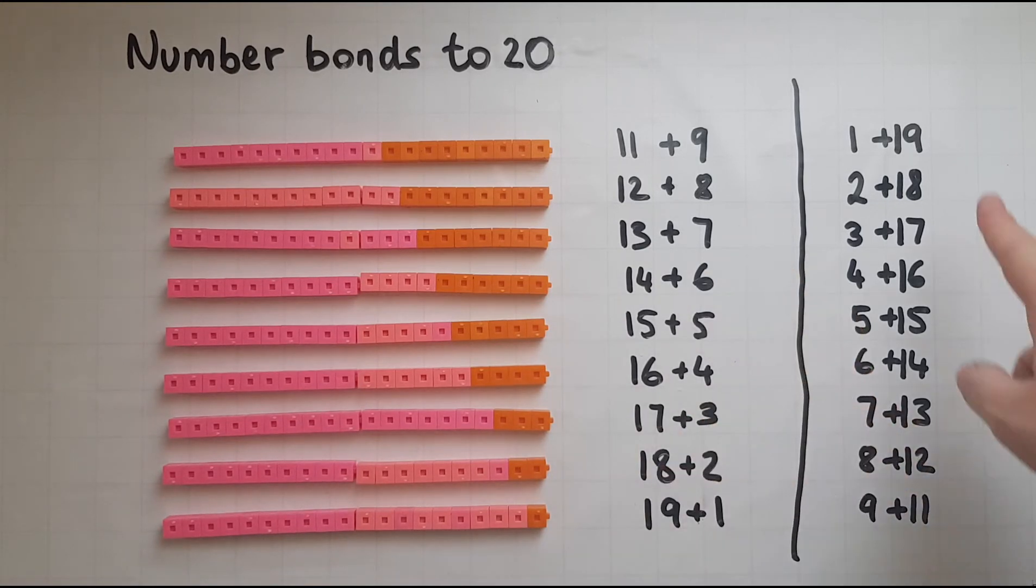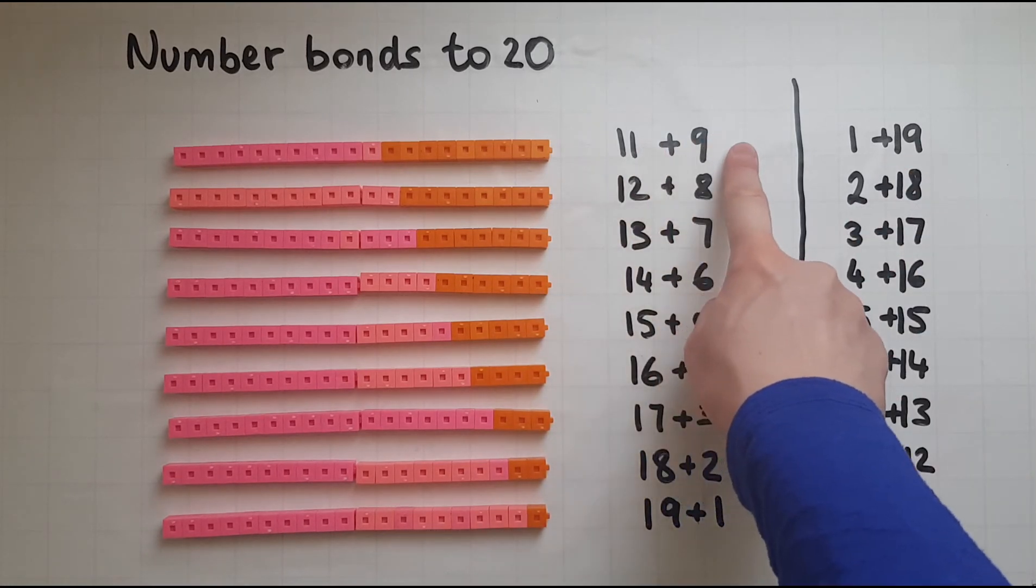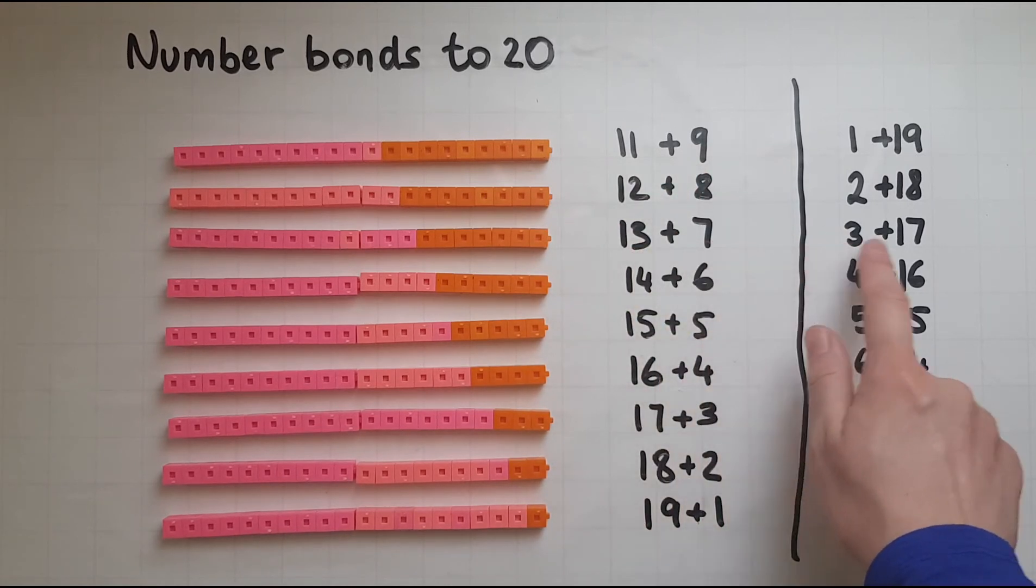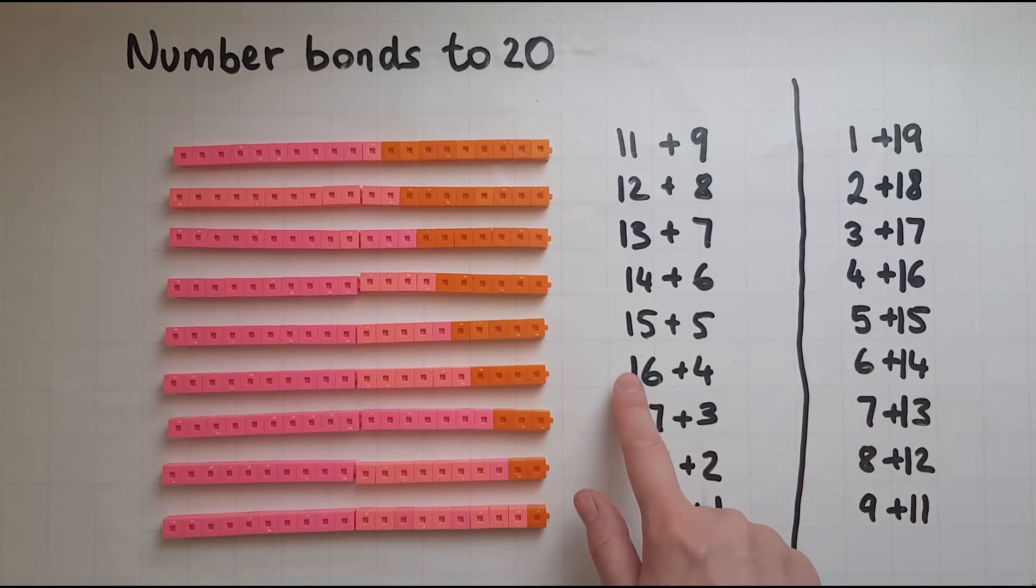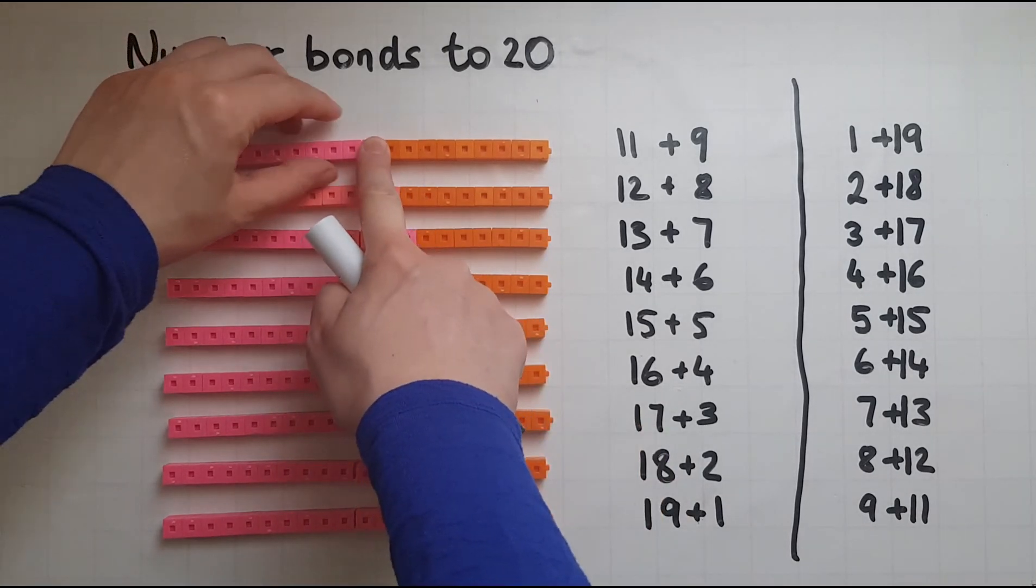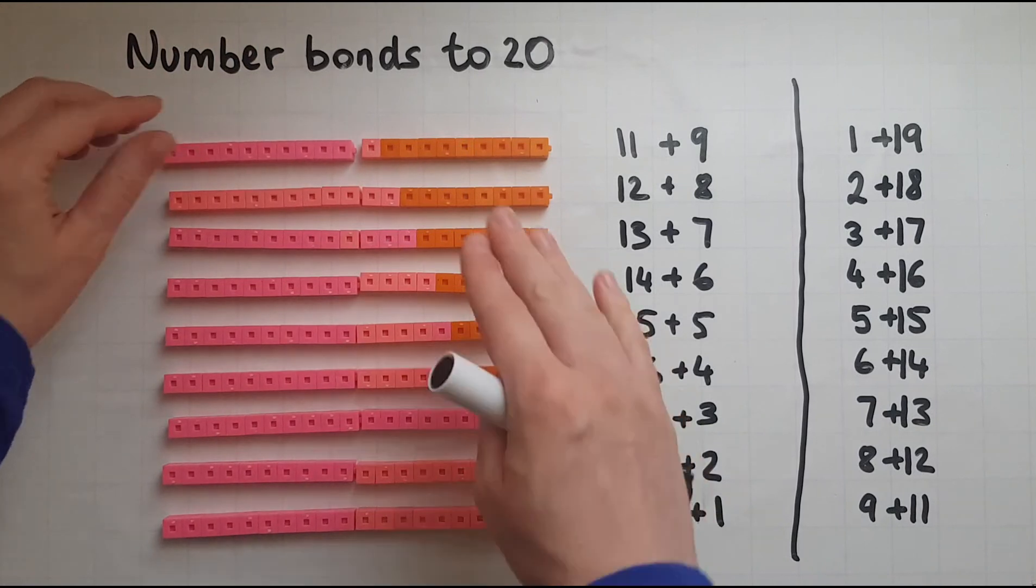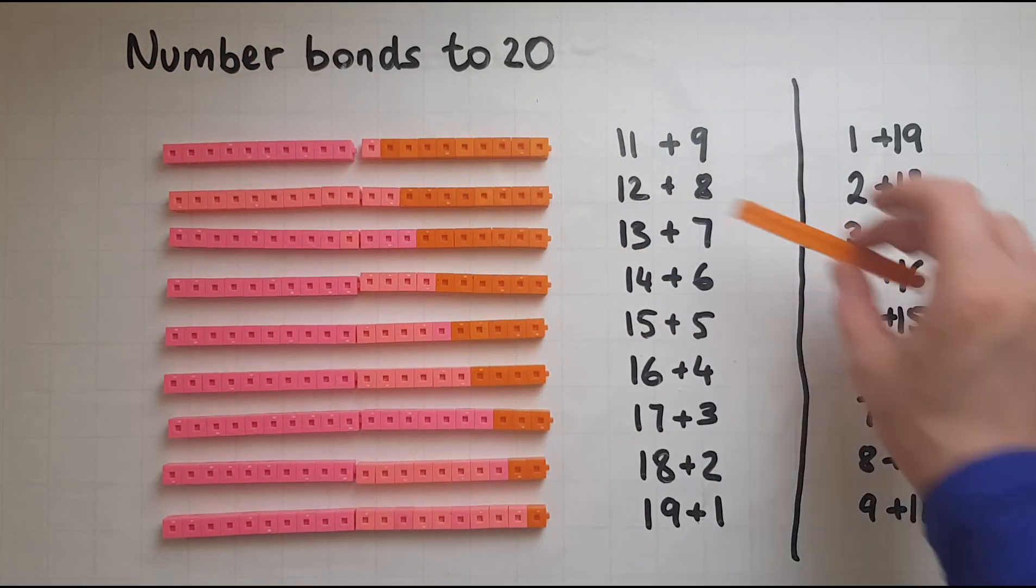So these are the number bonds to 20. We didn't change much from the number bonds to 10. In the first column we had 1 and 19, 2 and 18. So now we have 11 and 9, 12 and 8, 13 and 7, 14 and 6, 15 and 5, 16 and 4. So all that is changing is where you place that extra 10, that block of 10 cubes. Is it at the front or is it at the back with the orange cubes?